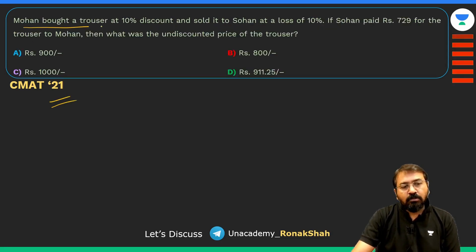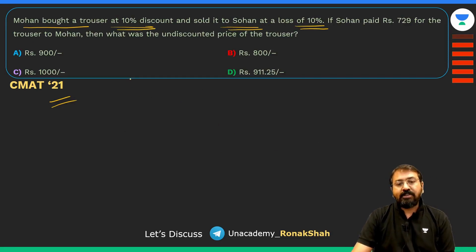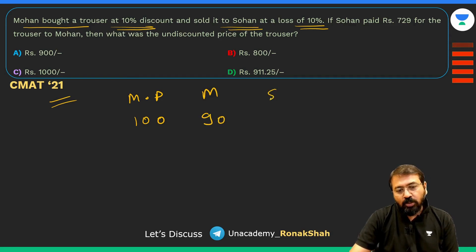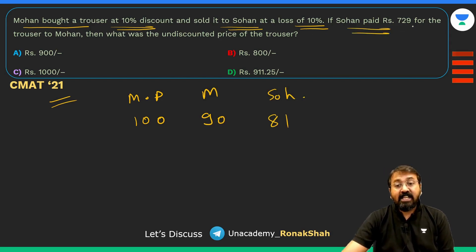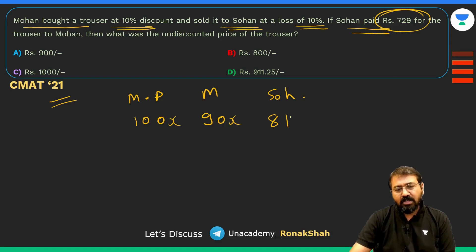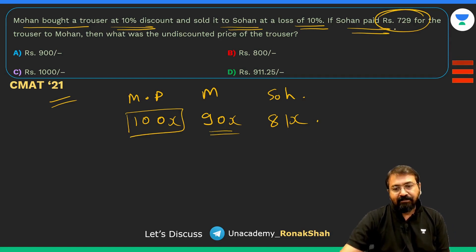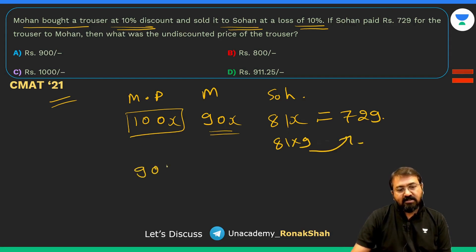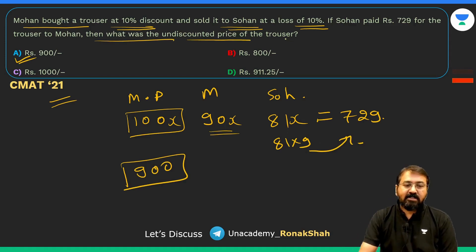CMAT 2021: Mohan bought a trouser at a 10% discount and sold it to Sohan at a loss of 10%. Suppose the marked price was 100, so Mohan bought it at 90 and sold to Sohan at 81 (10% loss on 90). If Sohan paid 729, then letting marked price = 100X, we have 81X = 729. Since 81 × 9 = 729, X = 9, so the marked price is 900.